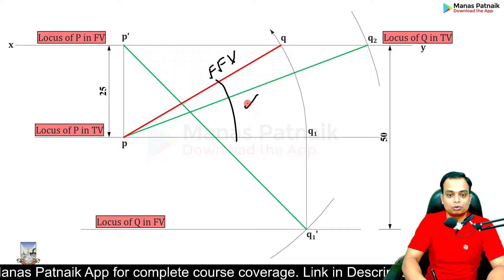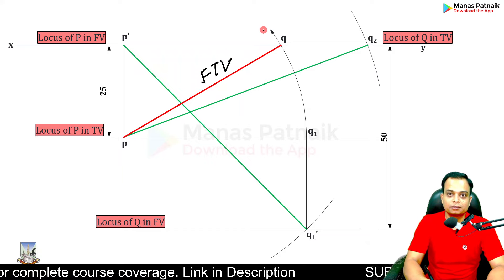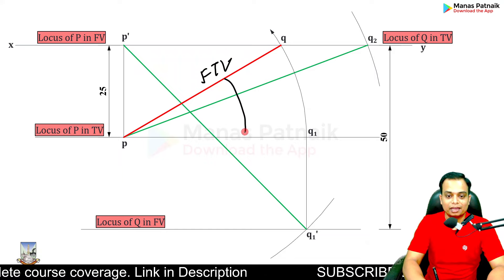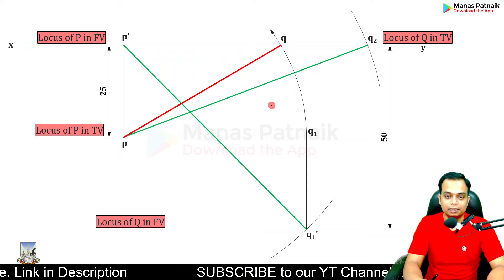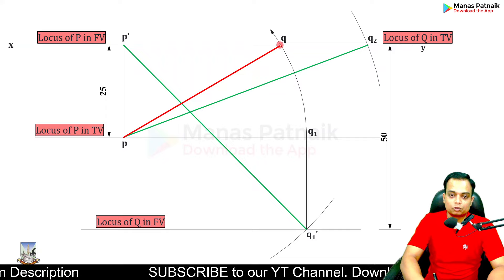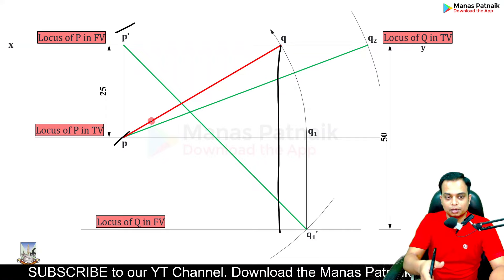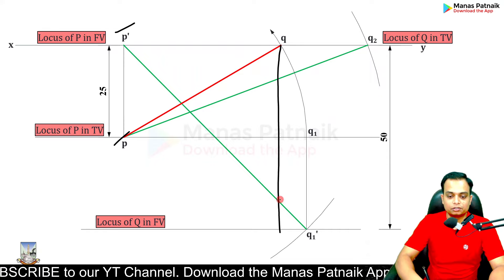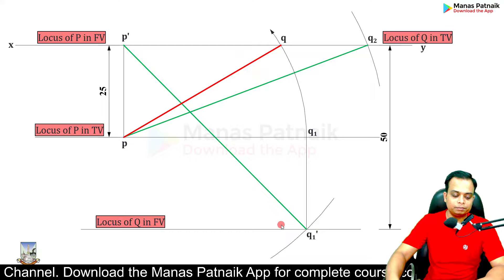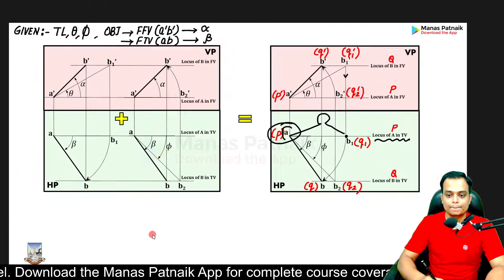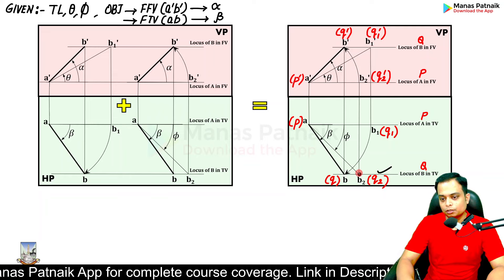The intersection with the locus of Q in top view gives you point Q. Connect Q with P — this is your final top view. The angle at P in the top view is represented by beta. You can also project Q downward: since P-dash and P are on the same vertical line, similarly Q gives Q-dash.